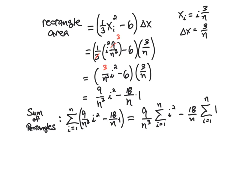The sum of all rectangles gives the area approximation. Using the summation symbol with i from 1 to n and applying linearity — essentially the distributive property — the constant 9/n³ factors out of the i² sum, and 18/n factors out, leaving just a sum of ones from 1 to n.